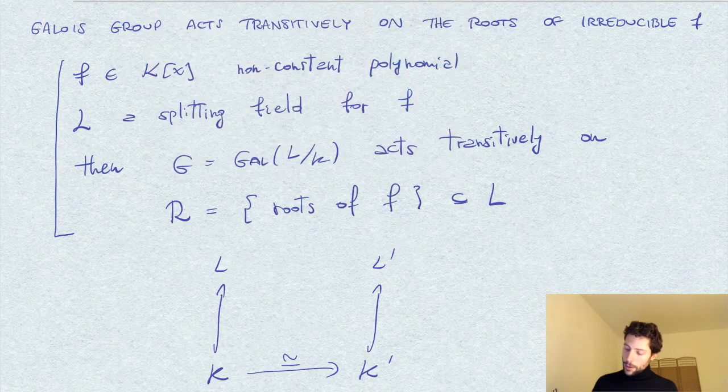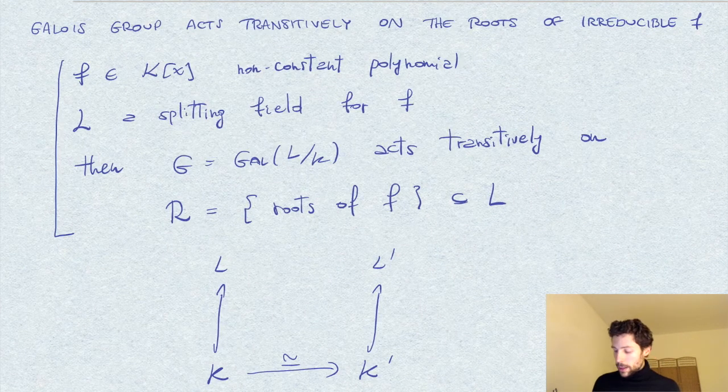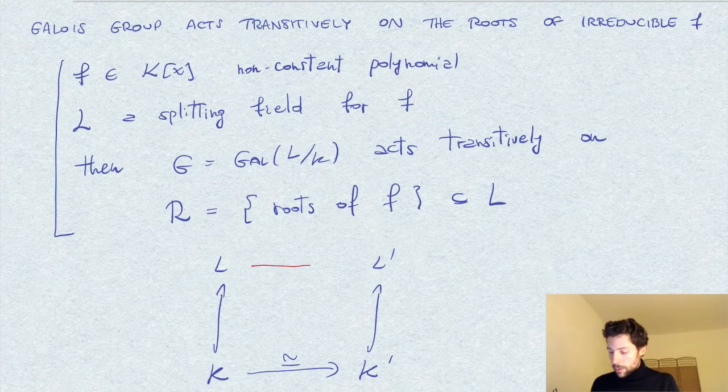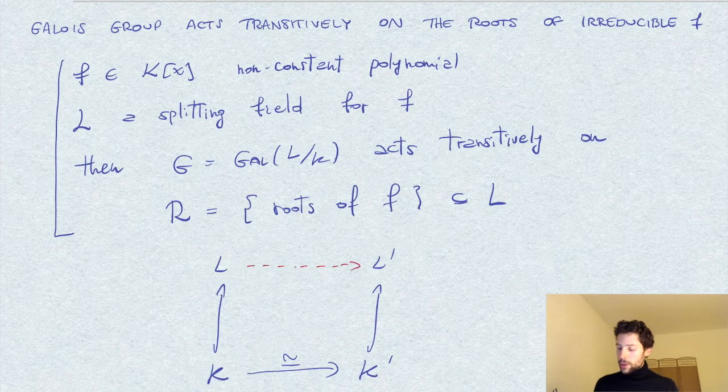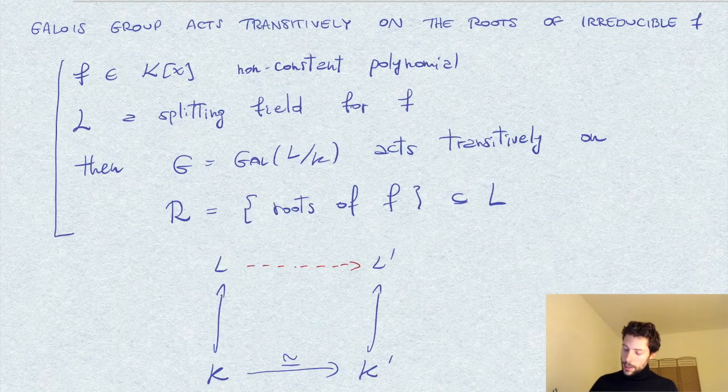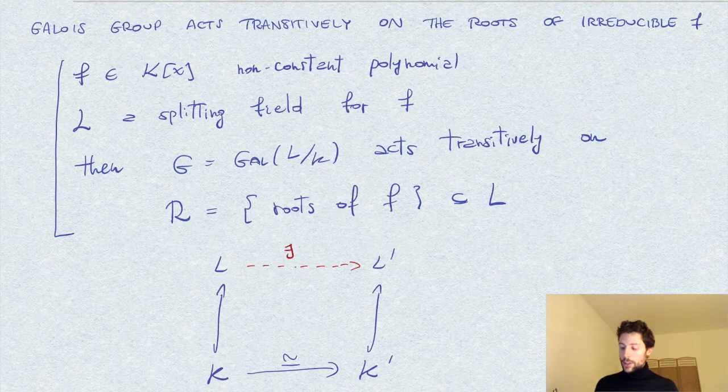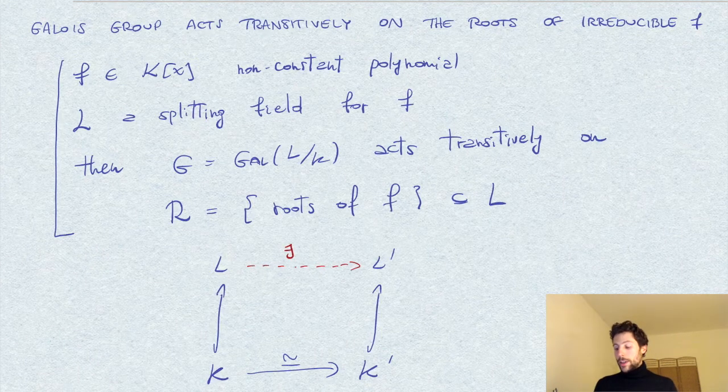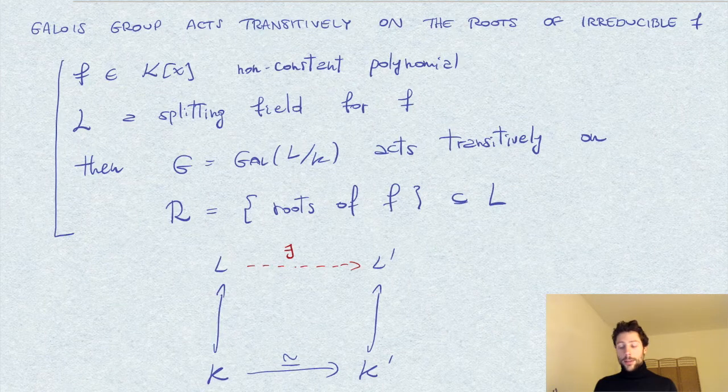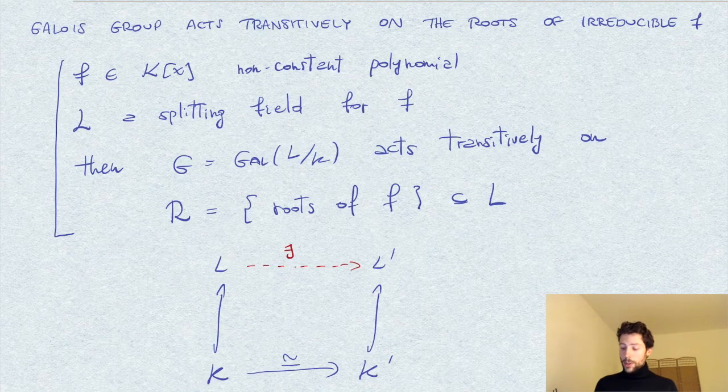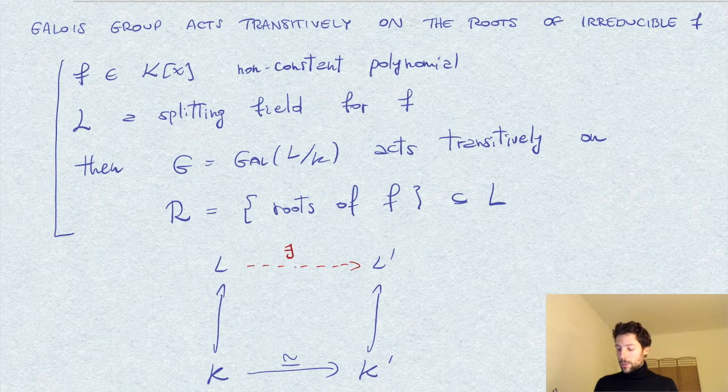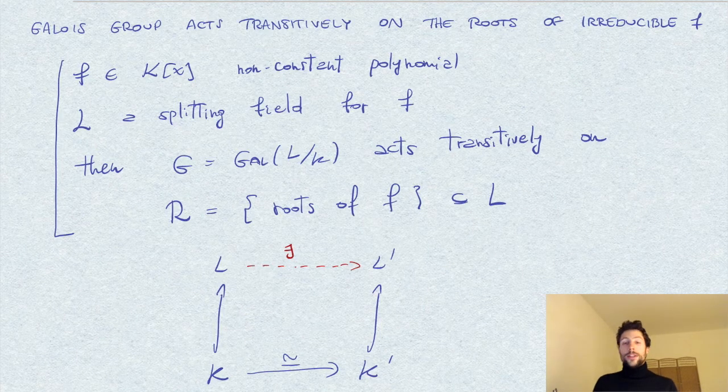then this theorem states that there exists an isomorphism of L into L prime which restricts to this isomorphism downstairs. So this diagram is a commutative diagram.